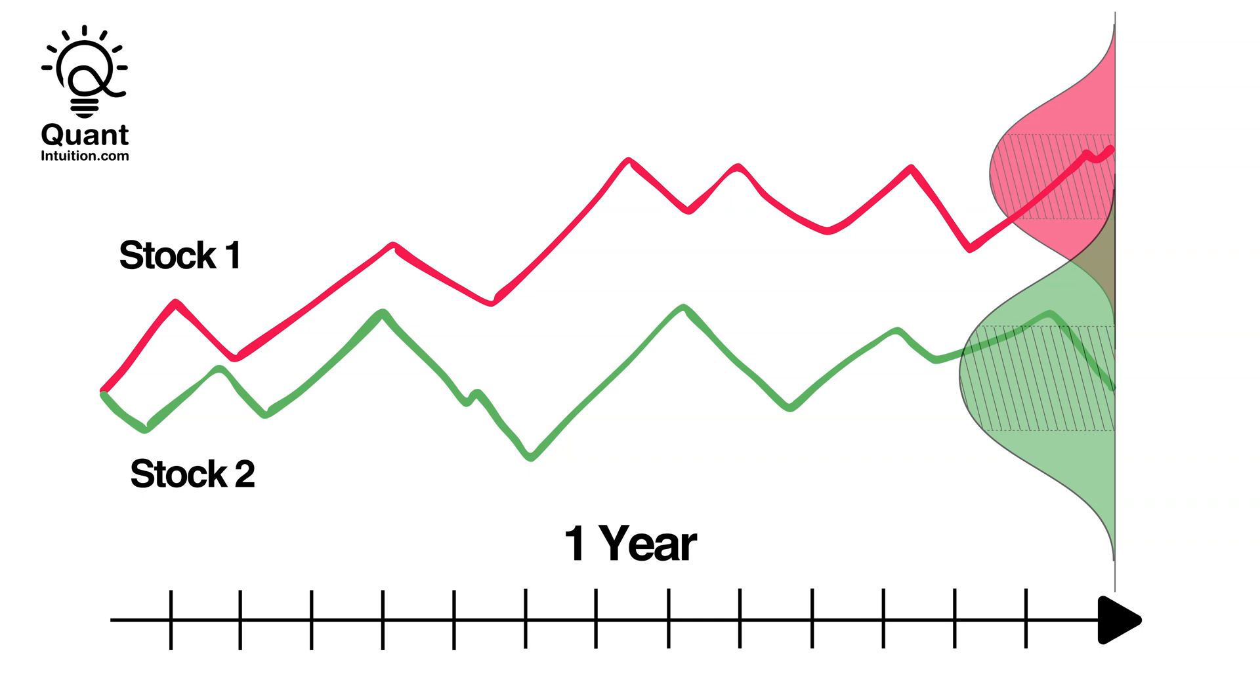Imagine two stocks that we track for a one-year timeframe. Since there's lots of uncertainty involved in the trajectory of the stock's prices, we can't say where they will end up after one year. However, we can assume that after one year the prices will have moved according to some distribution and model this using parameters such as the mean and a standard deviation.